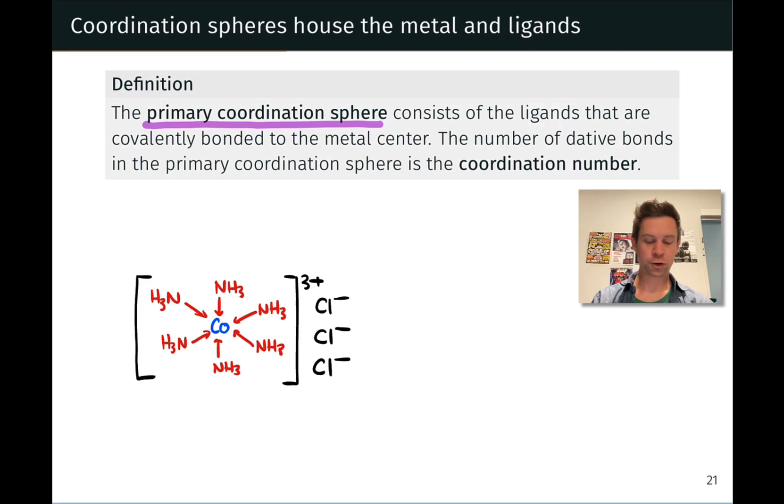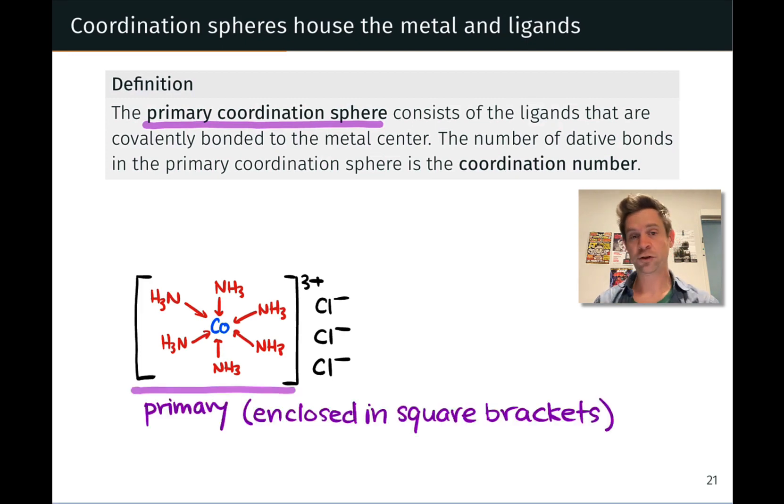For example, here in this cobalt-ammonia complex, the primary coordination sphere is enclosed in square brackets and includes the cobalt center and the six ammonia ligands, each of which is bonded to the cobalt center. There are actual coordinate covalent bonds there.